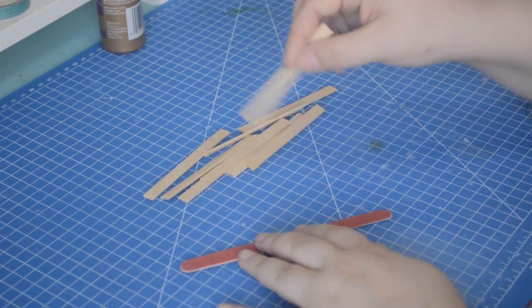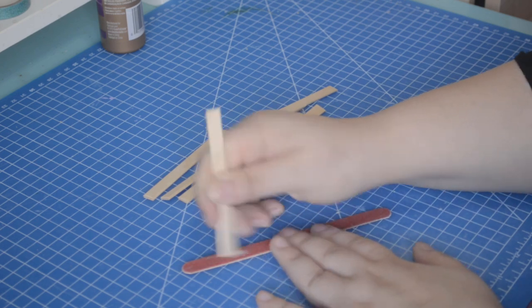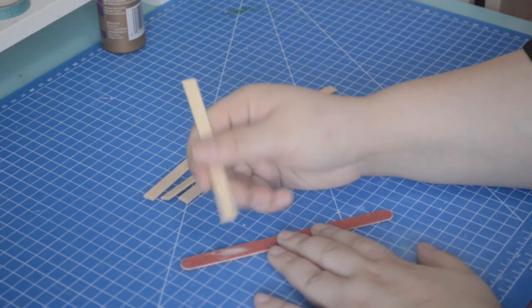Since cutting the sticks leaves the ends a little scraggly, we are going to use a dollar store nail file to sand them down and smooth them.